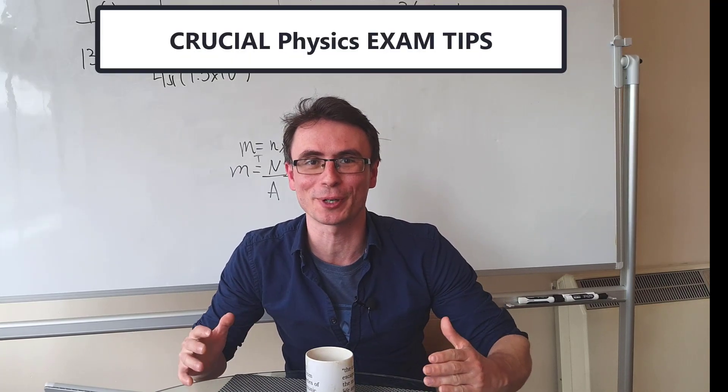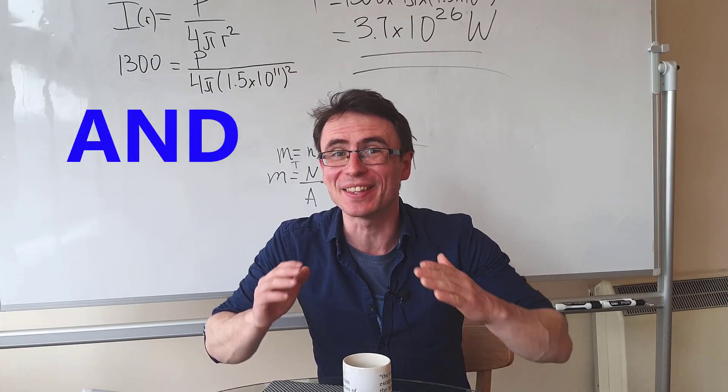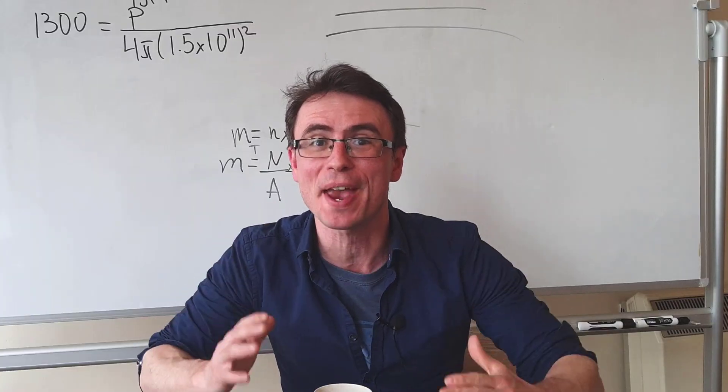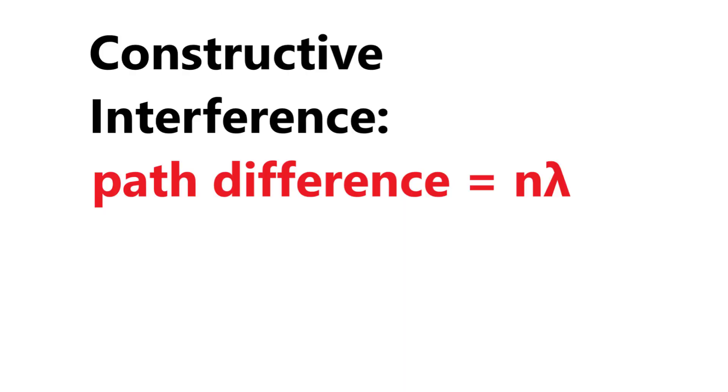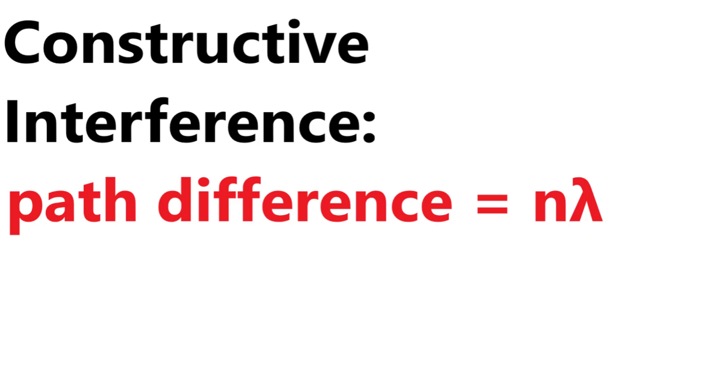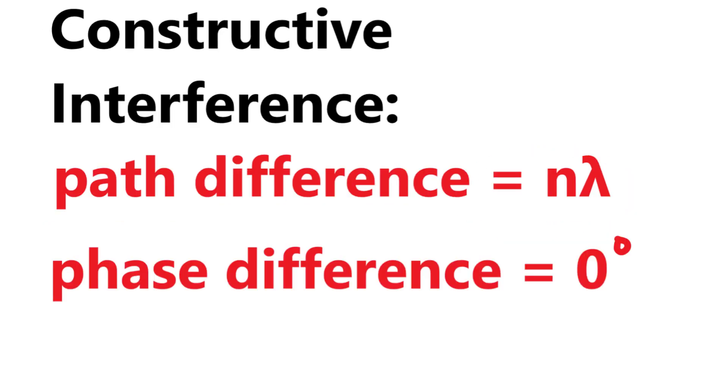Here are some crucial physics tips for exams. Path difference and phase difference are two very different quantities. For constructive interference, path difference is a multiple of the wavelength. Phase difference though is zero degrees.